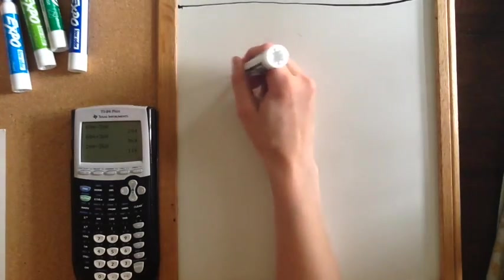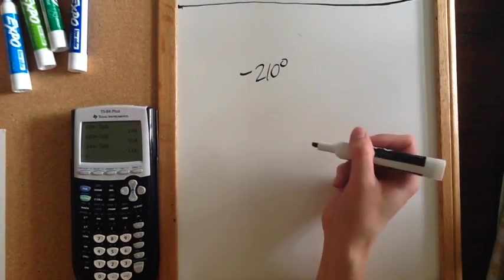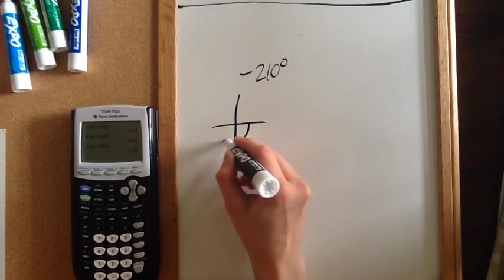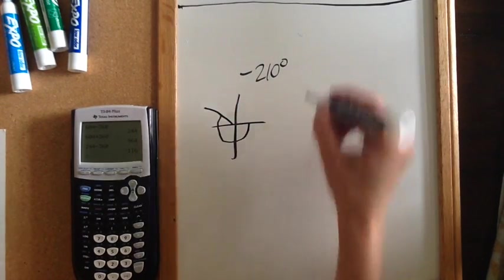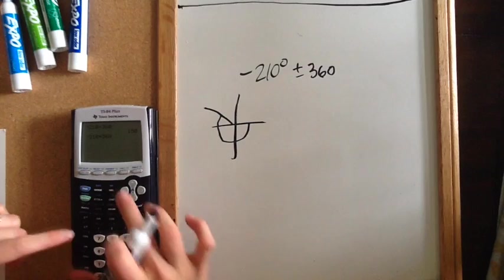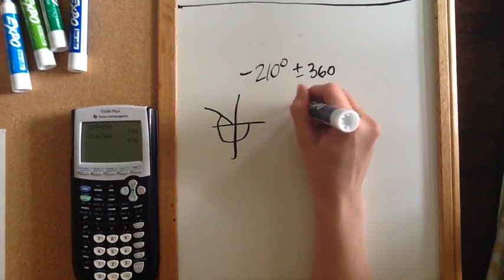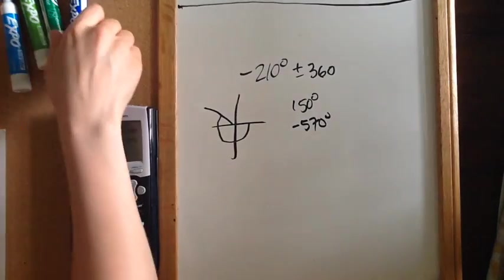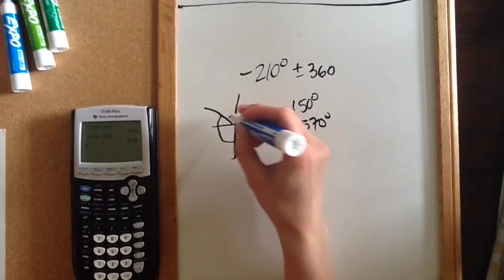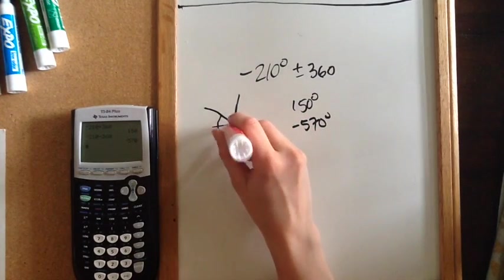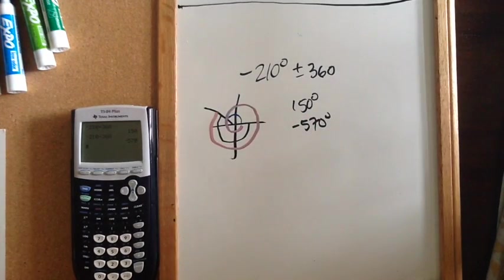If I give you negative 210 degrees, and to find coterminal angles you don't actually have to draw it, it's just nice sometimes to have a visual. Negative 210 is going to be past 180, so it's going to be about there. I'm going to add and subtract 360. In the calculator I'm going to take negative 210 and add 360, then hit enter. I can hit second enter to retype the same thing and then just hit subtract. So I end up getting 150 degrees and negative 570 degrees. This right here would be the 150 degrees and this would be the negative 570 degrees.